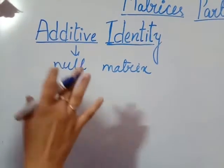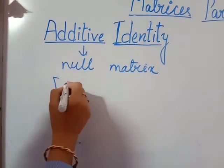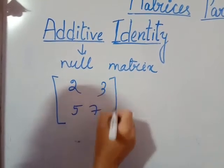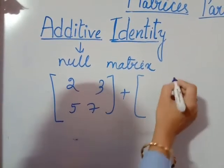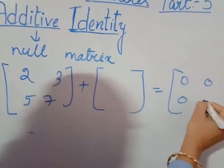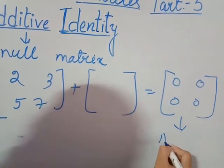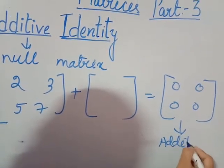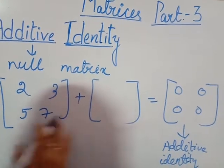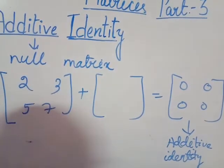For example, suppose one matrix is 2, 3, 5, 7. You have to add one matrix to it so that you will get 0, 0, 0, 0 — that is the additive identity. So you have to think about what you will add to get that null matrix result.